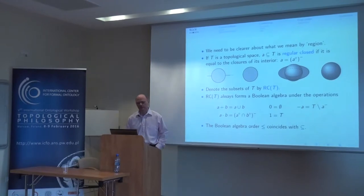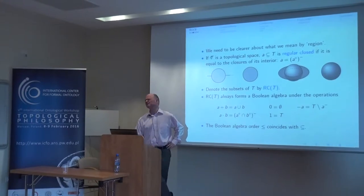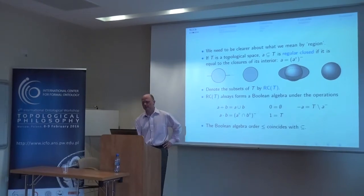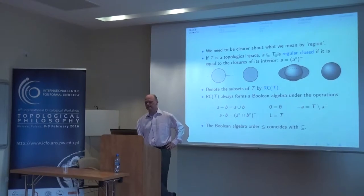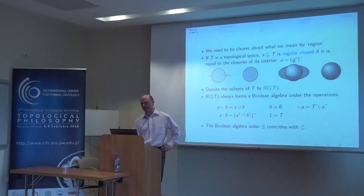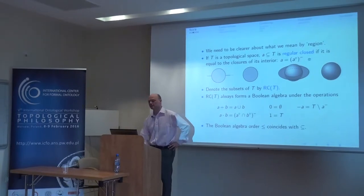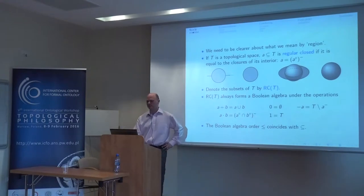Now what about the interpretation of the language? We need to be a bit clearer about what we mean by a region. If T is a topological space, a subset of that space is said to be regular closed if it is equal to the closure of its interior. Circle means take the topological interior of a region; minus superscript means take the closure of a region. So a region is equal to the closure of its interior, and such regions are called regular closed.